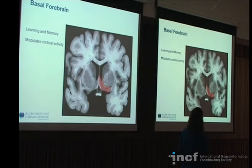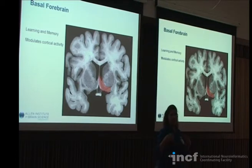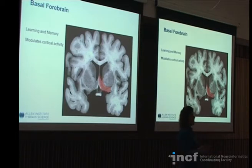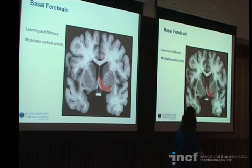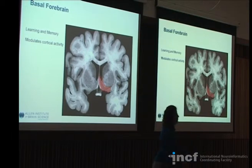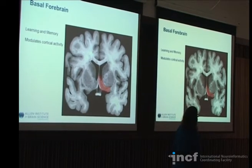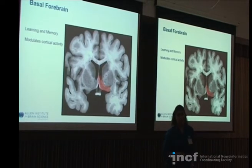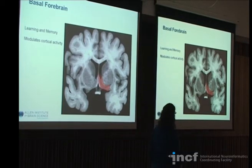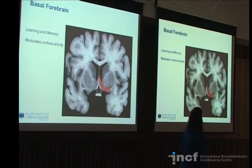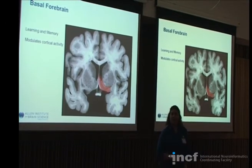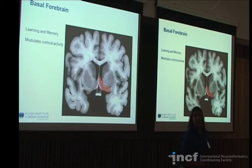The basal forebrain consists of a couple of really small nuclei that are primarily cholinergic. The cholinergic innervation of these nuclei goes throughout the cerebral cortex, helping to modulate activity and involved in memory and learning processes. It's one of the areas affected fairly early in Alzheimer's disease. Most of the therapeutics used right now for Alzheimer's that involve cholinesterase inhibitors are designed to counteract the fact that the cells sending out acetylcholine are in the process of dying. By altering the cholinesterase activity in the rest of the brain, you can keep the neurotransmitter in the synaptic cleft a little bit longer, until these cells die.